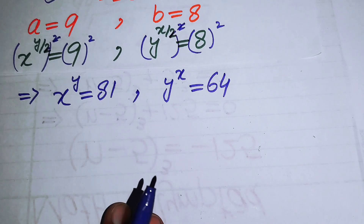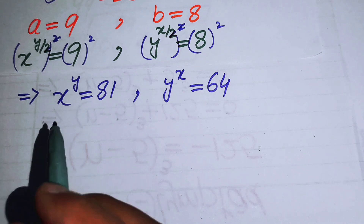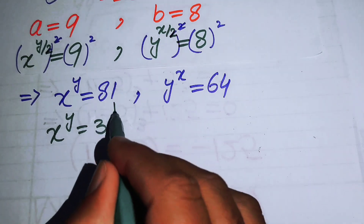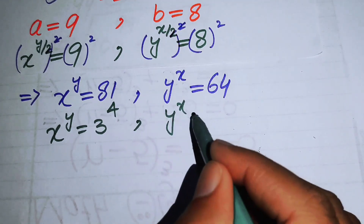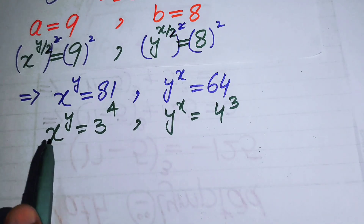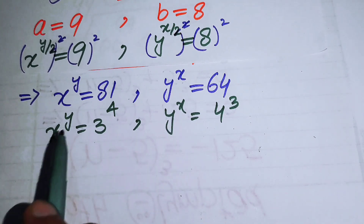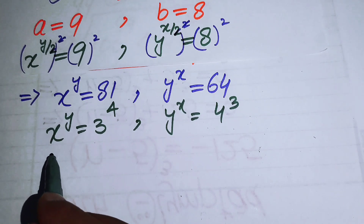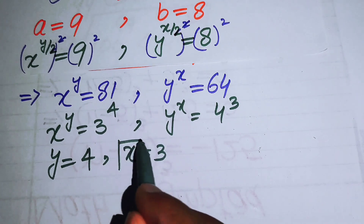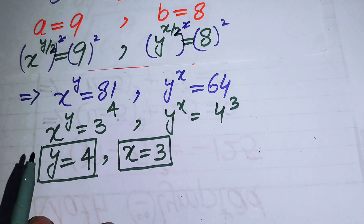We write 81 as 3 to the power of 4, and 64 as 4 to the power of 3. Comparing both sides, we get x equals 3 and y equals 4. These are our required values.